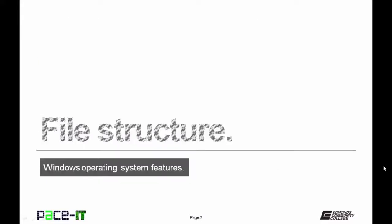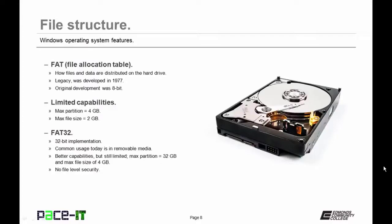Now let's move on to file structure, beginning with FAT. FAT stands for File Allocation Table — it's how files and data are distributed on the hard drive. It's legacy, developed in 1977, originally 8-bit. It had limited capabilities: a max partition of 4 gigabytes and a max file size of 2 gigabytes.